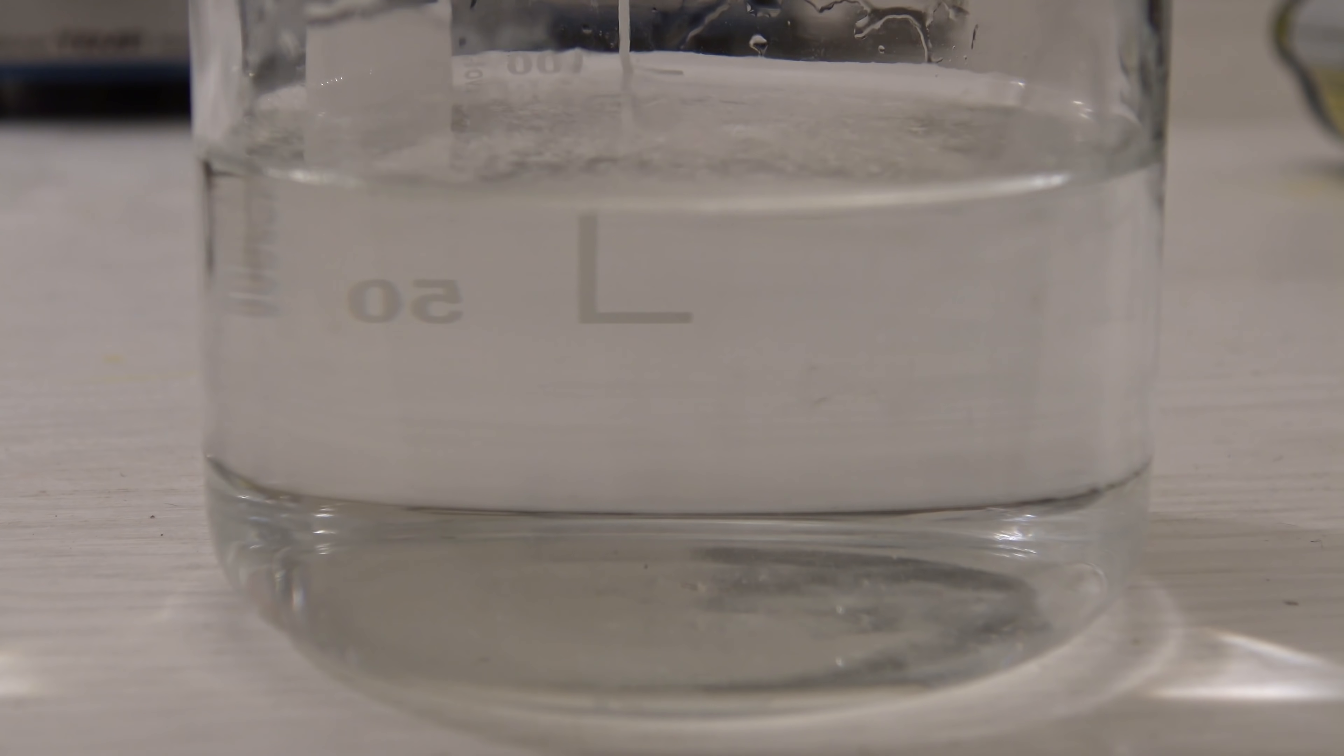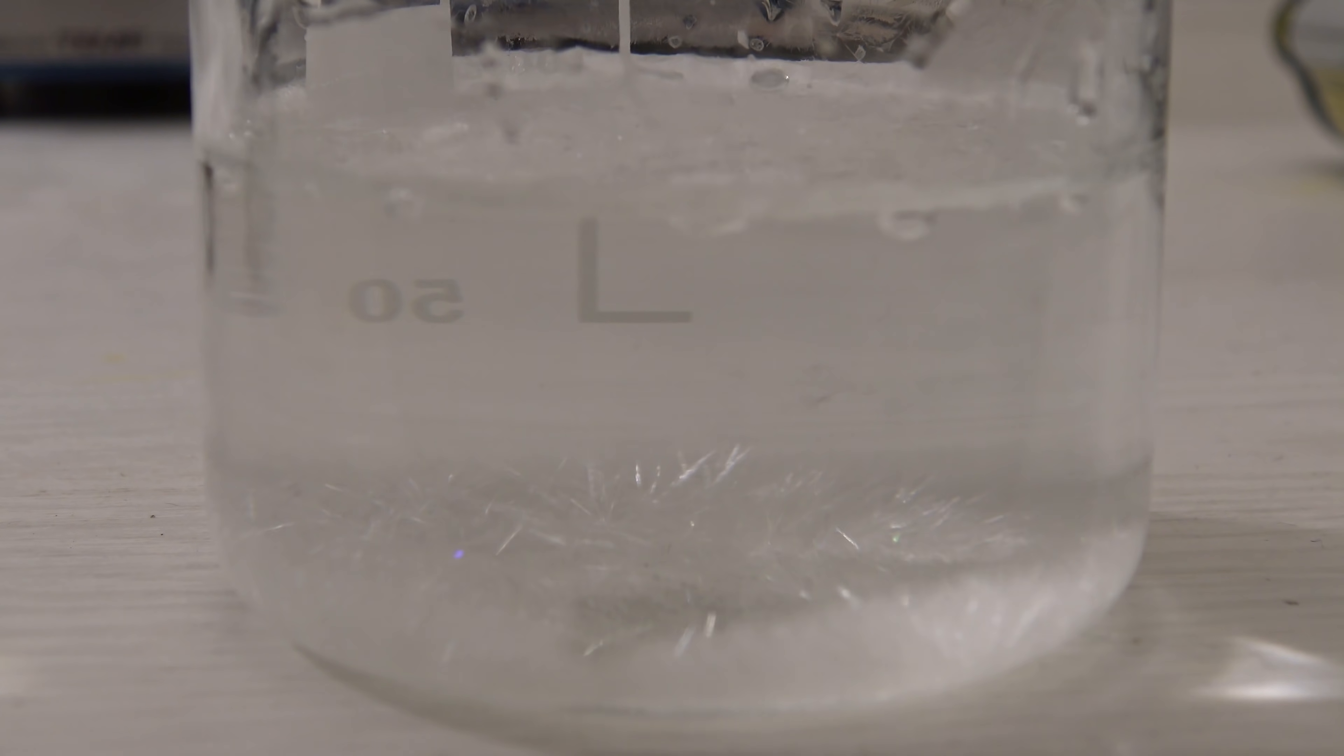When it cooled down, it could be seen that it's good that the beaker is covered. Above the solution, small crystals could be observed, which would otherwise spread around the beaker. Benzoic acid forms colorless needle-shaped crystals, as it can be seen here.